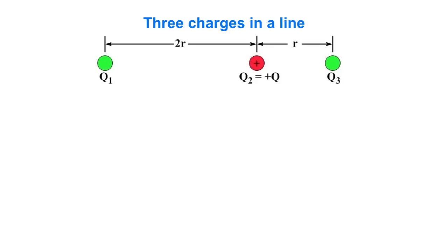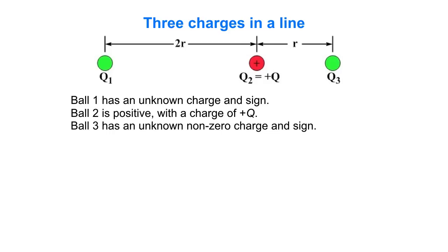We'll start by looking at this problem with three charges in a line. Ball one has an unknown charge and sign. Ball two is positive with a charge of +Q. Ball three is an unknown non-zero charge and sign. Q1 is 2R to the left of Q2, and Q3 is R to the right of Q2.